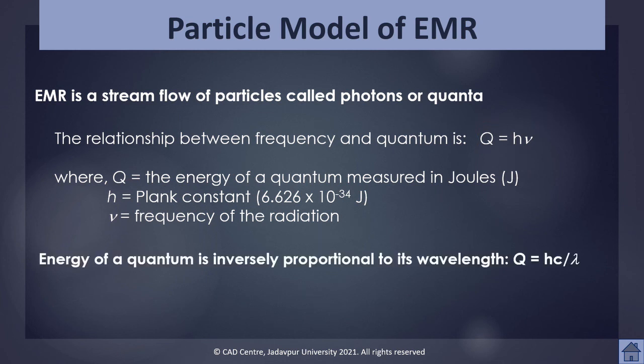From the equation Q = Hν, we can understand that energy is directly proportional to frequency — if the energy increases, the frequency will increase, and if the energy decreases, the frequency will decrease. We don't have a direct equation relating energy to wavelength, but we can derive it.